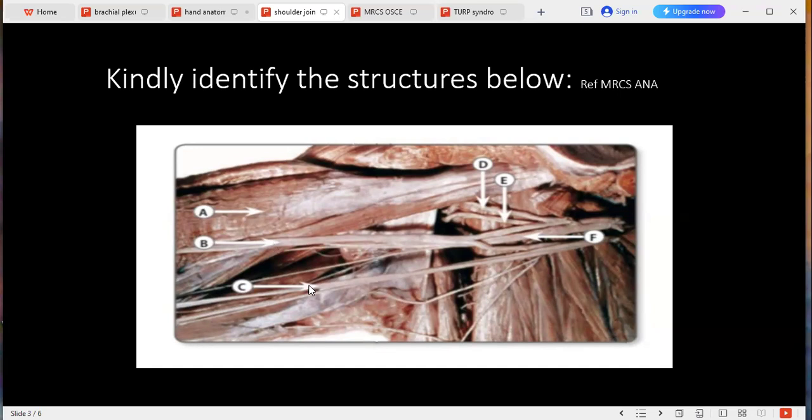B is okay, and then C. C is the lateral cord giving the branch. Sorry, median cord, median cord giving the ulnar branch. All right. Okay, if you can identify number F please. F is the middle trunk of the brachial plexus. Okay, medial root of the median nerve. E please. E is the axillary nerve from the posterior cord.